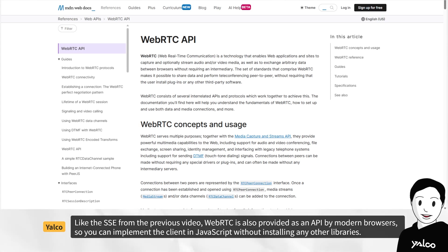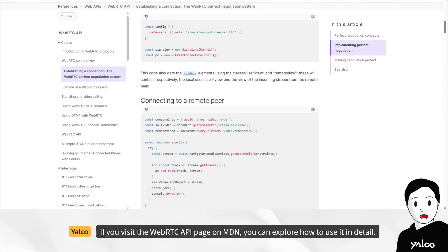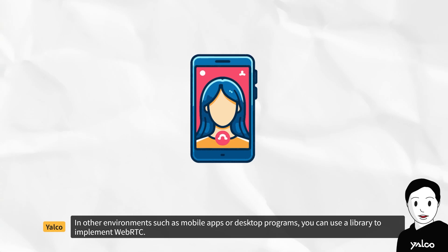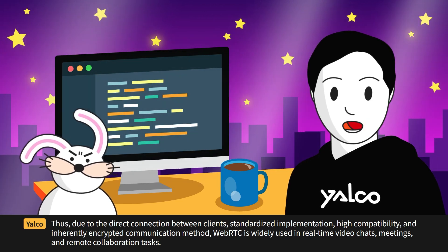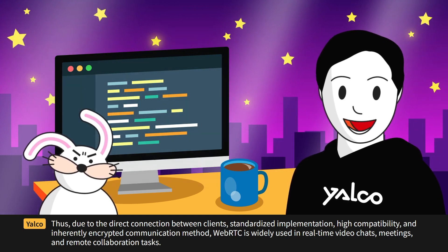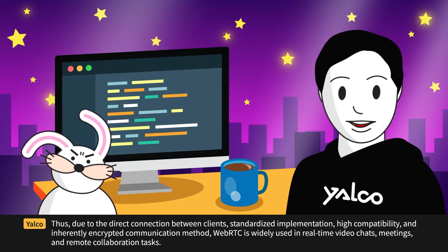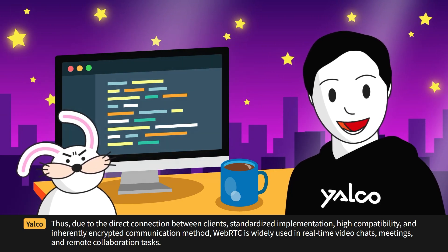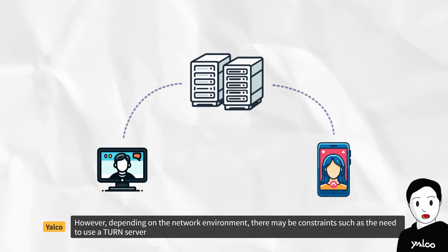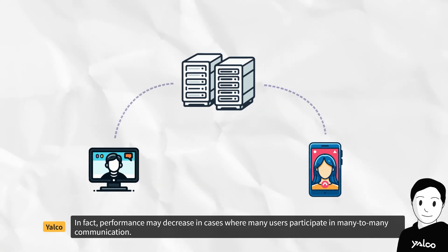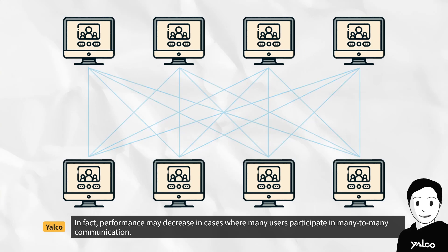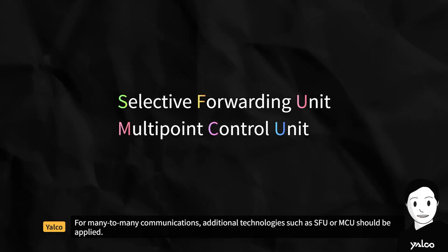Like SSE from the previous video, WebRTC is also provided as an API by modern browsers, so you can implement the client in JavaScript without installing any other libraries. You can explore how to use it in detail on the WebRTC API page on MDN. In other environments, such as mobile apps or desktop programs, you can use a library to implement WebRTC. Due to the direct connection between clients, standardized implementation, high compatibility, and inherently encrypted communication, WebRTC is widely used in real-time video chats, meetings, and remote collaboration tasks. However, performance may decrease in cases where many users participate in many-to-many communication, and additional technologies such as SFU or MCU should be applied.